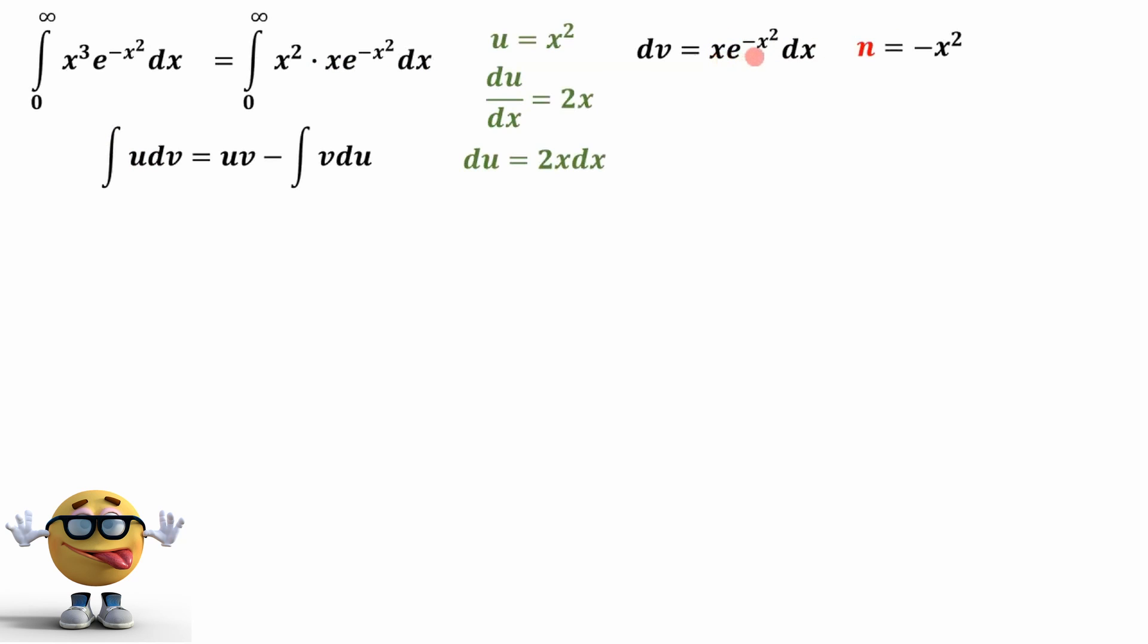And to integrate this, we're going to do a substitution. We'll say n equals negative x squared. Therefore, derivative of n with respect to x is negative 2x. And we can plug that into here. So n is negative x squared. And then if we solve for x dx, if we rearrange this equation, solve for x dx, we get dn over negative 2. Hope you see that, that we substitute in there.